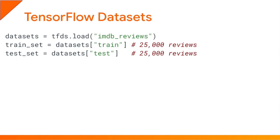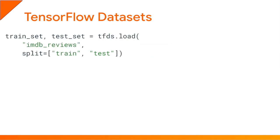When TFDS loads a dataset, it's generally already split into a train set and a test set. In the case of the IMDB reviews dataset, each split contains 25,000 reviews. The load function returns a dictionary containing each split. Alternatively, you can specify the splits you want when calling the load function, and in this case the function returns the splits as a list. Each dataset may have multiple versions, so you can specify the version you want. If you only want to work on a subset of a split — for example, only the first 60% of the test set — you can specify it like this. This can be useful if you want to use part of the test split for testing and the rest for validation.